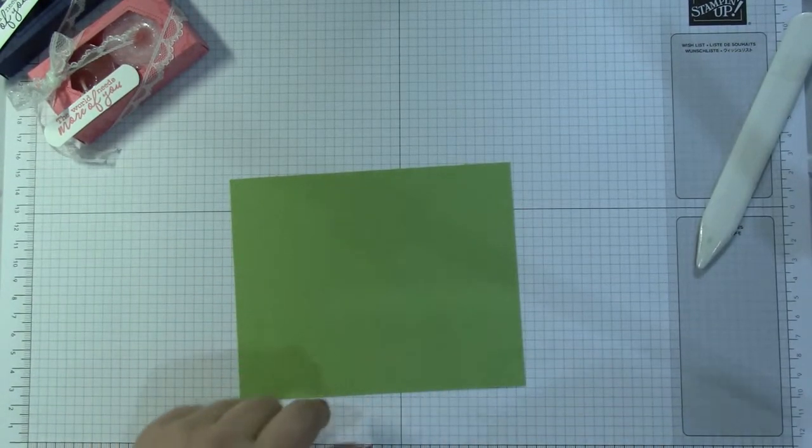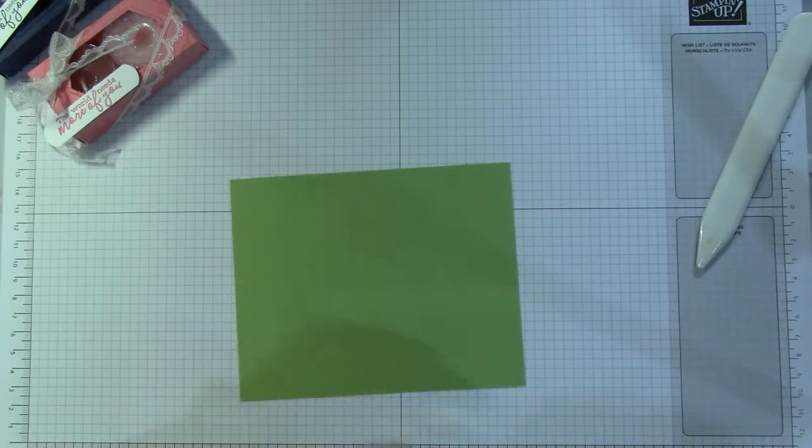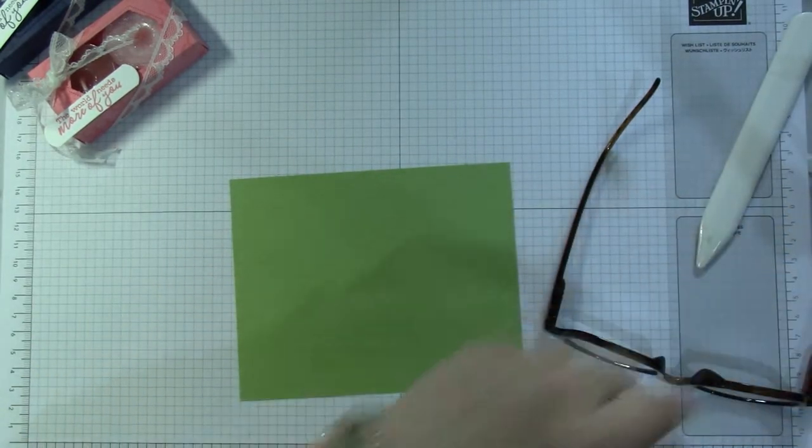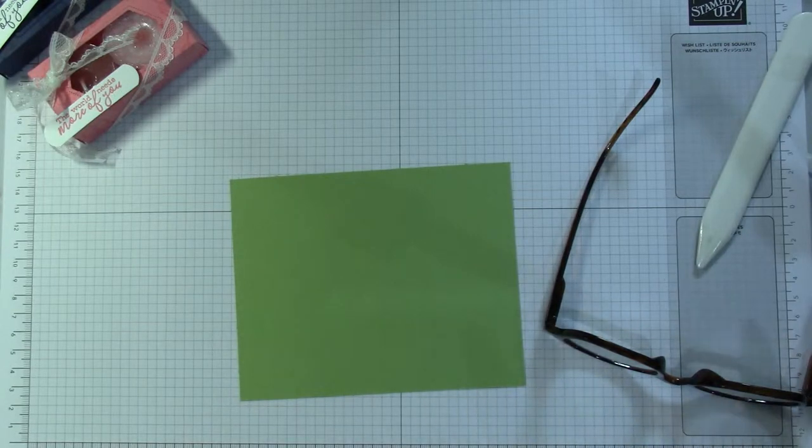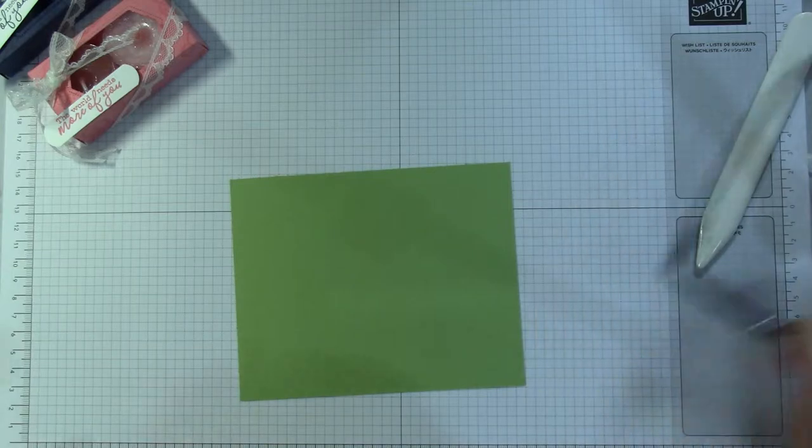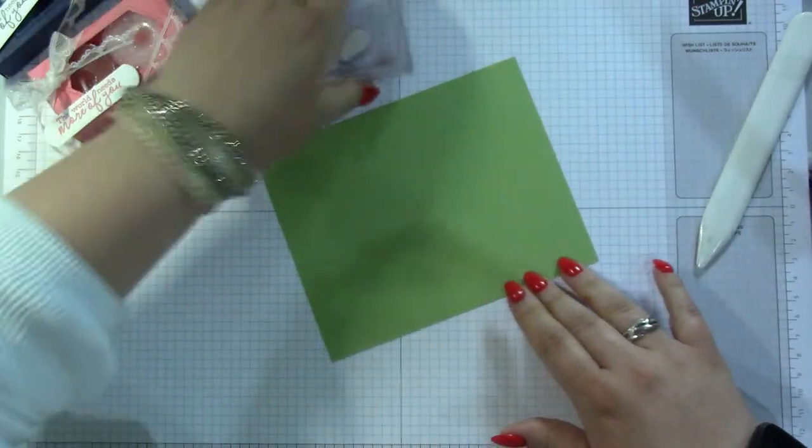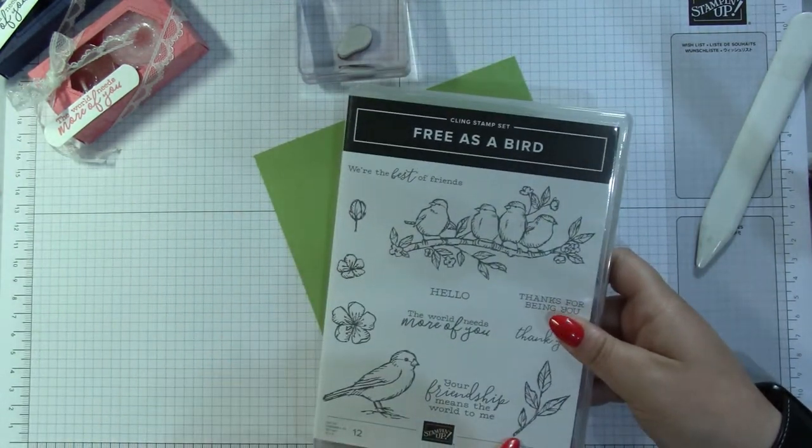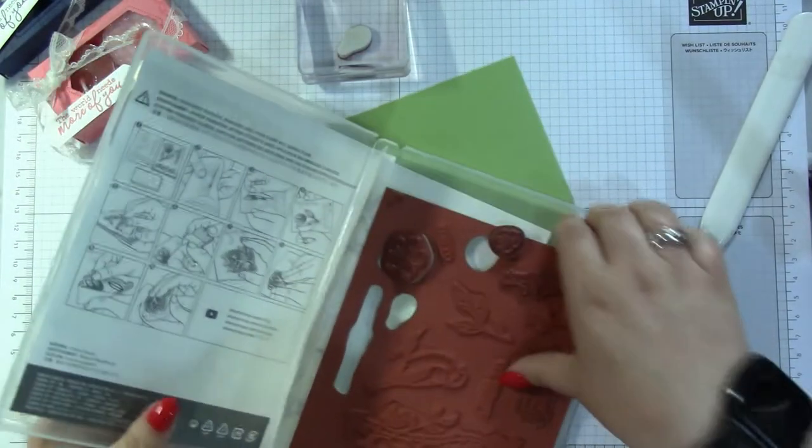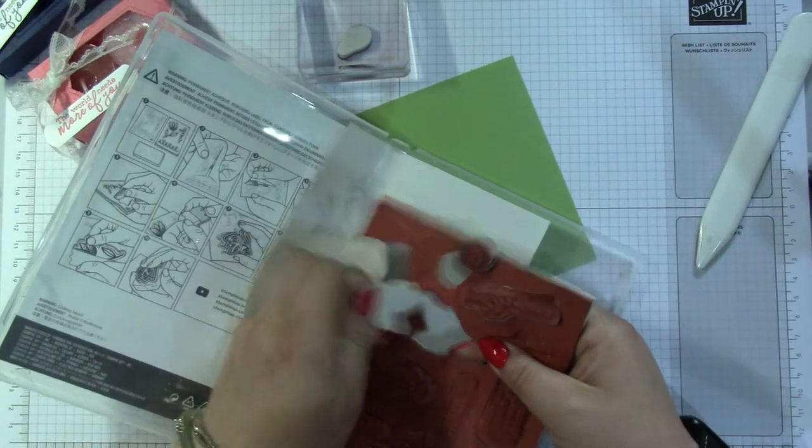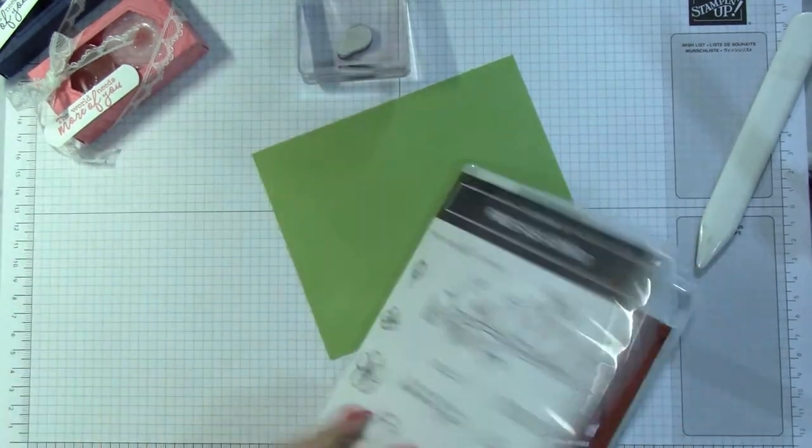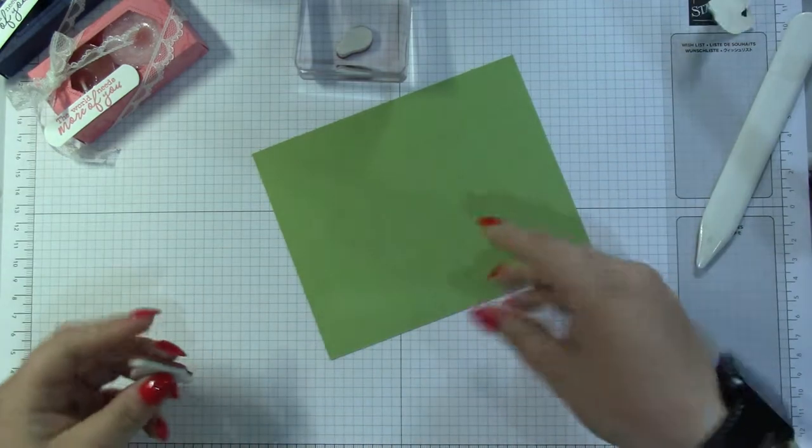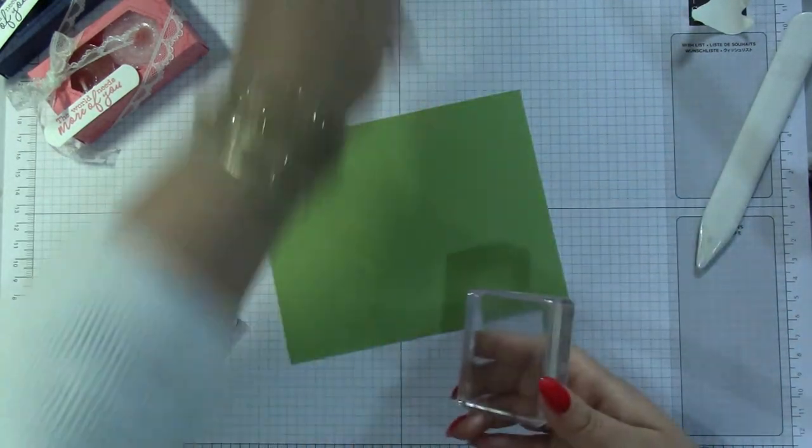We're going to do some stamping on it first. These aren't exactly alike for like conversion. When I was converting it was giving me like 1.9 and I just thought that's too faffy. I'm going to use the Free as a Bird and use these little flowers here and actually I might use that leaf given that we're doing green. It's the first day in a long time this actually hasn't rained, it is beautiful and I even had an ice cream for my lunch.